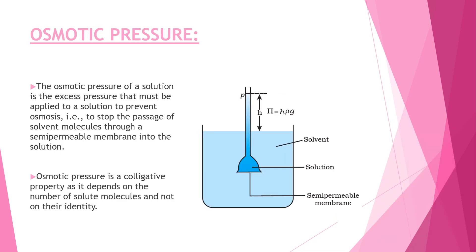The osmotic pressure of a solution is the excess pressure that must be applied to a solution to prevent osmosis — that is, to stop the passage of solvent molecules through a semi-permeable membrane into the solution. Osmotic pressure is a colligative property, as it depends upon the number of solute particles and not on their identity.